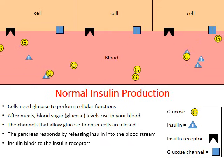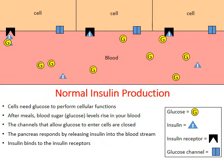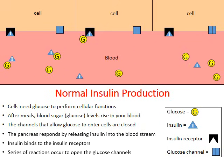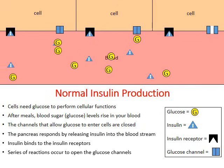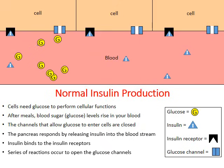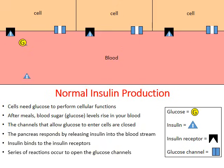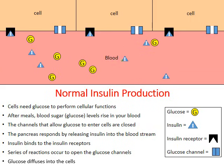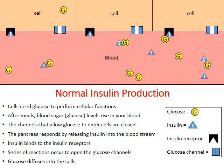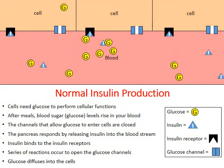What happens is the insulin will bind to those black insulin receptors, and once that happens, a series of reactions will occur that ultimately cause the glucose channels to open. Now that the channels are open, the glucose can enter the cells, and the glucose molecules can simply diffuse into the cells from a high concentration to a low concentration.